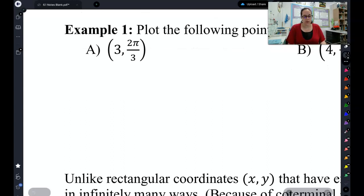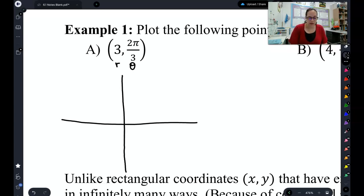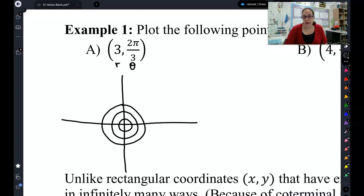Here we have our first polar coordinate point, 3 comma 2π/3. Remember, 3 is the r, 2π/3 is the theta. So I'm going to draw a graph here. I want my radius to be 3. So I'm going to draw 3 out. That gives me a radius of 3, and I want the theta to be 2π/3. So I know 2π/3 is about there. So that gives me a radius of 3 long and an angle of 2π/3. So we don't need that line anymore. We're just graphing these as a point. That is the point. That is a radius of 3 and an angle of 2π/3.